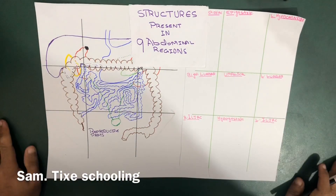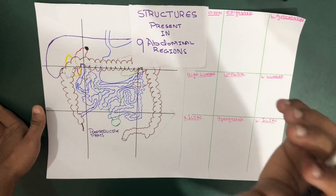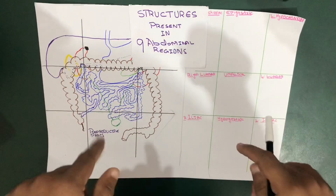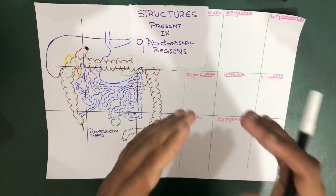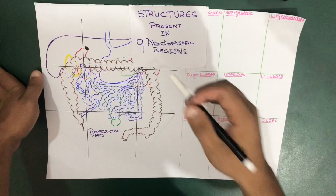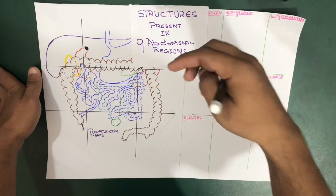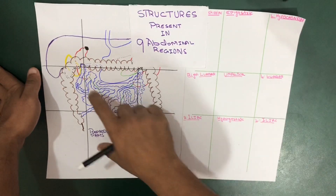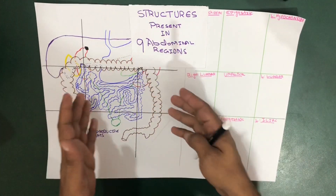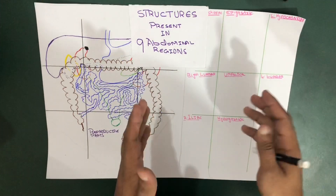Hello learners, this is Sam from TAGZ Schooling. In this session, we're going to talk about the structures that are present under the nine abdominal regions, and we are going to talk in very much detail. We're going to explain each and every structure present inside the abdominal region using this diagram and by mentioning the names of different structures present in different abdominal regions.